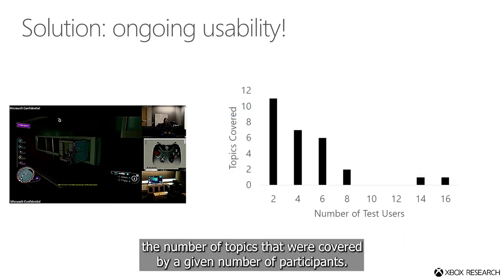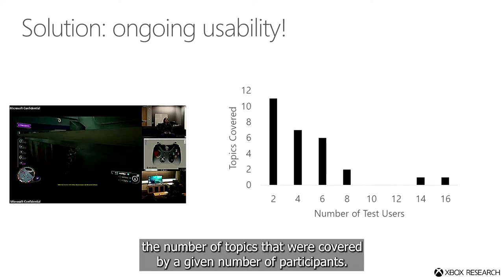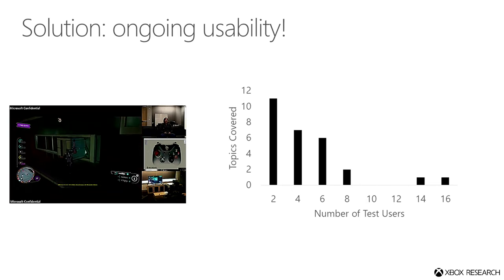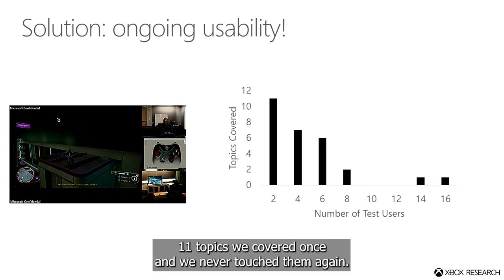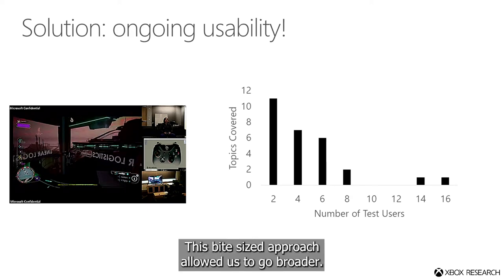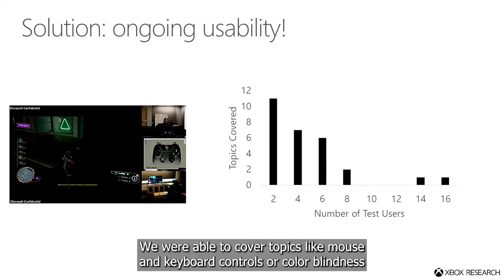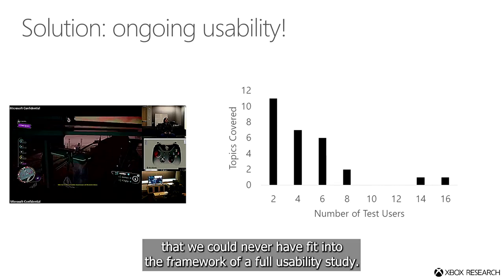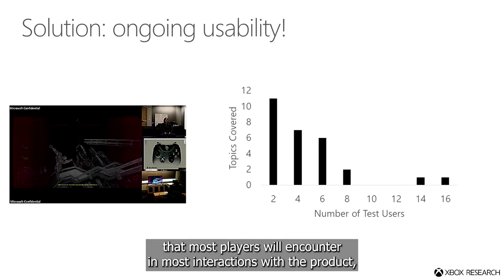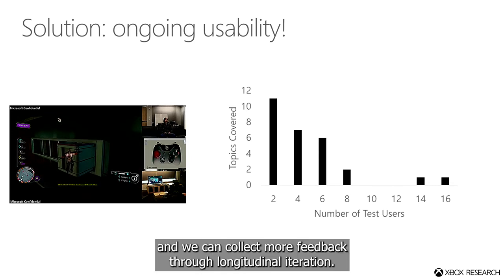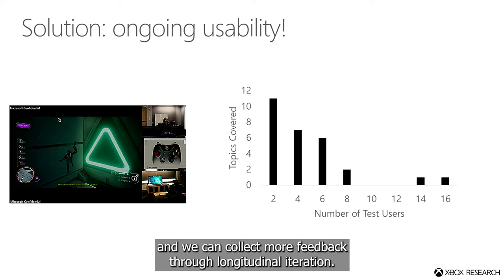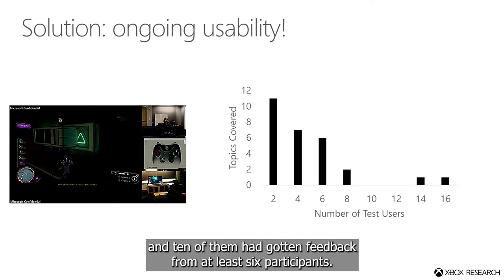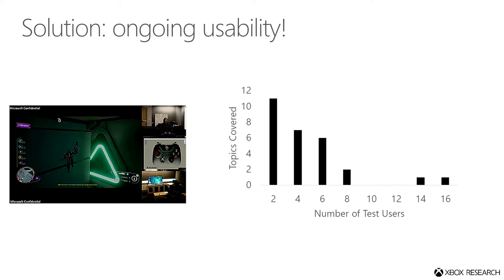The chart on the right shows the number of topics covered by a given number of participants. This illustrates two things. First, not every problem requires the same amount of attention. Eleven topics we covered once and never touched again. This bite-sized approach allowed us to go broader — we were able to cover topics like mouse and keyboard controls or color blindness that we could never have fit into the framework of a full usability study. And second, there are core systems that most players will encounter in most interactions with the product, and we can collect more feedback through longitudinal iteration. By the end, we had run 36 participants, covered 28 topics, and 10 of them had gotten feedback from at least six participants.